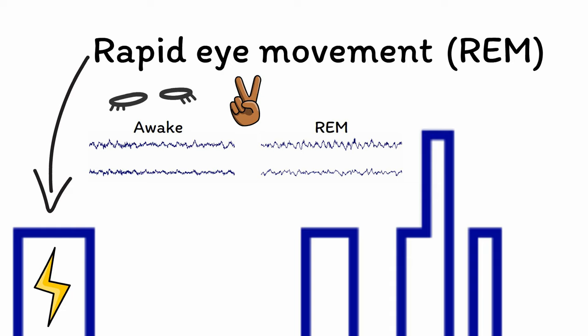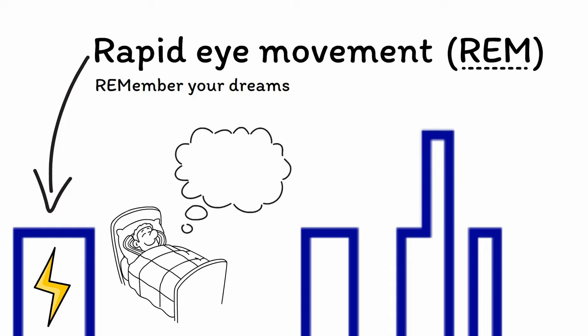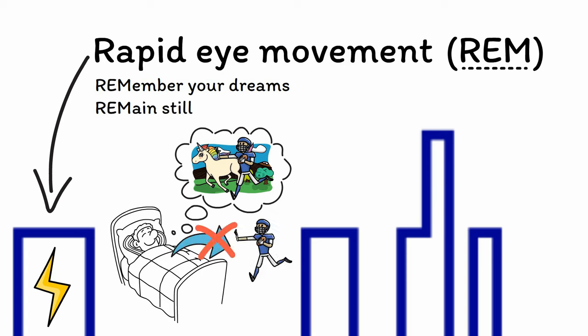Luckily, both of these patterns start with the letters REM. First, REM sleep is when you are most likely to remember your dreams, as this is when the most dramatic dreaming occurs, with some studies estimating that around 80% of all dreams occur during this stage. Despite all this mental activity, someone in a state of REM sleep is likely to physically remain still, as REM sleep is associated with muscle paralysis throughout the body, with only the muscles of breathing and eye movement remaining active.